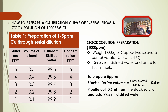To prepare a calibration curve of 1 to 5 ppm from a stock solution of 1,000 ppm copper, weigh 1.000 g of copper(II) sulfate pentahydrate, CuSO₄·5H₂O, and dissolve in distilled water and dilute to the 100 ml mark. Pipette 0.5 ml from that solution and add 99.5 ml of distilled water to make a concentration of 5 ppm.